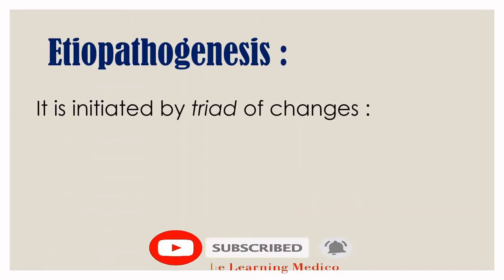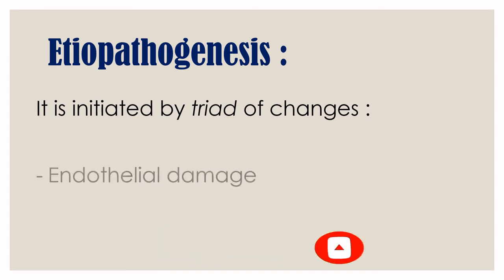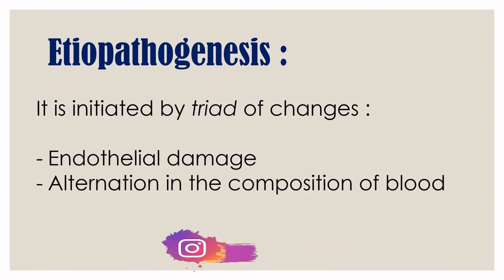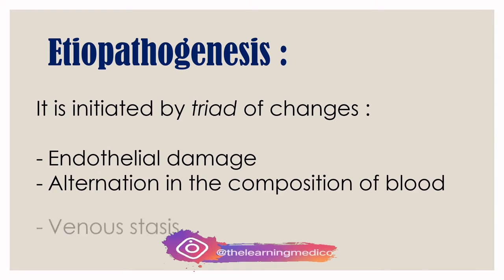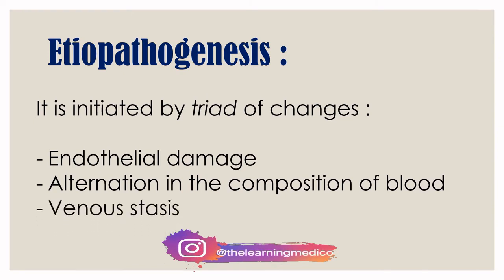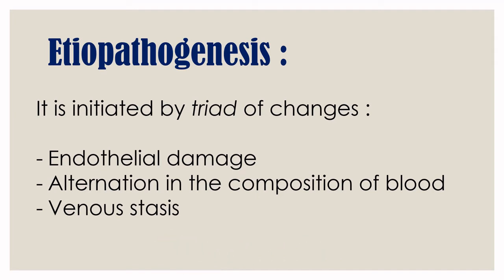Now, etiopathogenesis. Deep Vein Thrombosis is initiated by a triad of changes: endothelial damage, alteration in the composition of the blood, and venous stasis. When we studied thrombosis in pathophysiology, the causative factors were the same triad: endothelial damage, alteration in blood composition, and venous stasis.